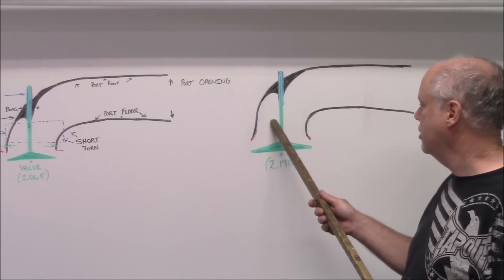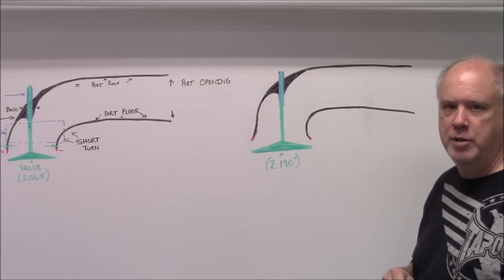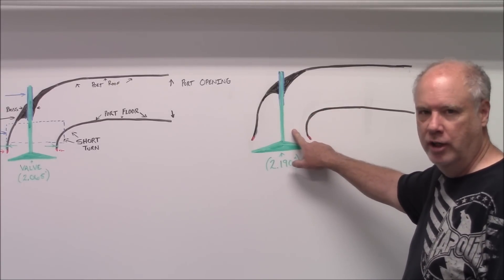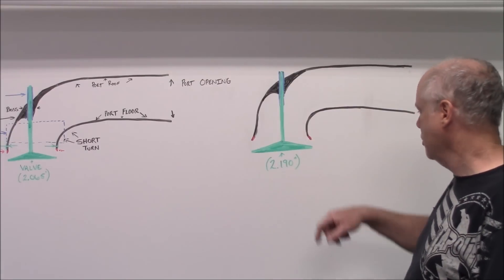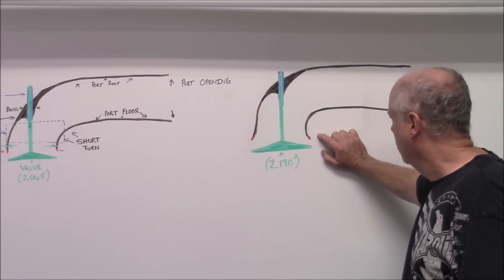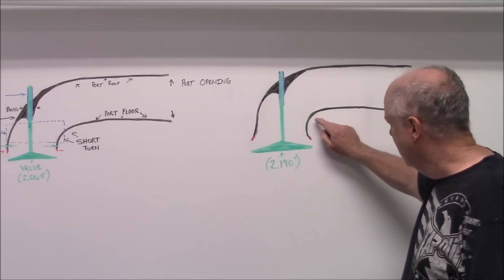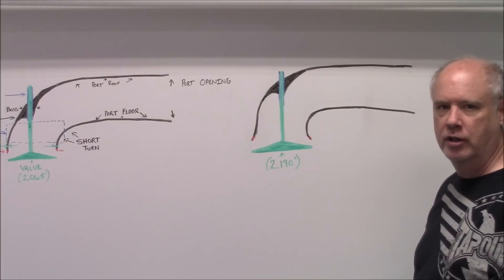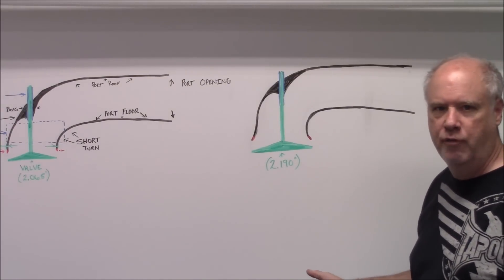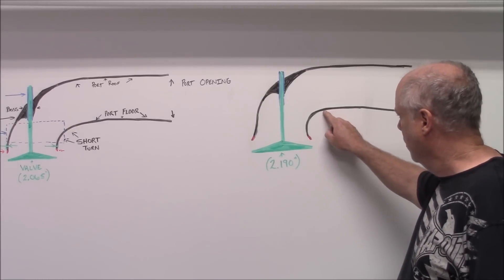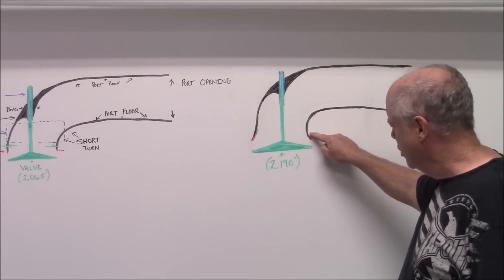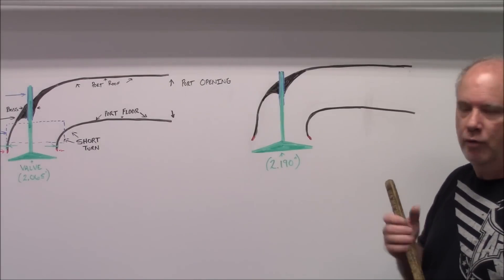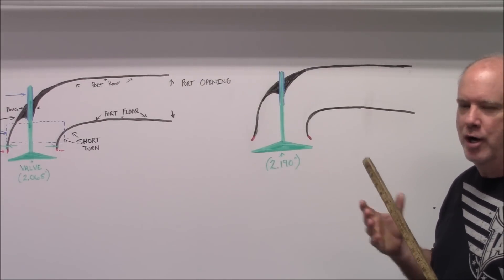After this bigger intake valve is machined and set up in this head, let's say that this thing flows 275 at 500 lift. It's very possible that this port will lose flow at 550 lift because of this right here, the shape of the short turn. So let's say it flows 275 at 500 lift, and it flows 268 at 550 lift. And that is directly because of this shape right here, the way this short turn is shaped compared to how this short turn is shaped. Hopefully you can make sense of that. I'm trying my best.